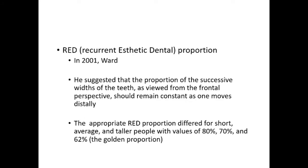To create aesthetically pleasing smiles, the recurring aesthetic dental (RAD) proportion was introduced in 2021. It was suggested that the proportion of successive widths of the teeth as viewed from the frontal perspective should remain constant as one moves distally. The appropriate RAD proportion differed for short, average, and taller people with values of 80%, 70%, and 62% respectively.